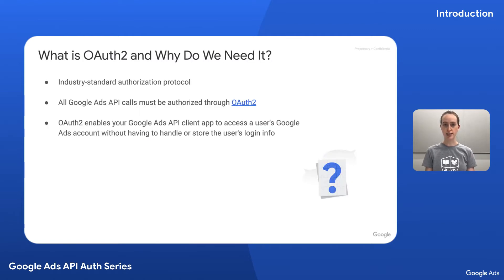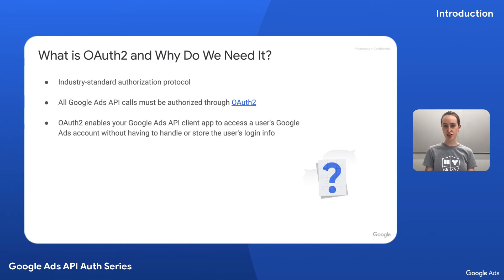OAuth 2 is an industry standard protocol that Google uses to handle authentication and authorization without the need to share private credentials, like a password. With OAuth 2, you can retrieve data from or perform operations on behalf of a Google account via the API. By the end of this episode, it will make sense how to use OAuth 2 to perform authentication and authorization with the Google Ads API.